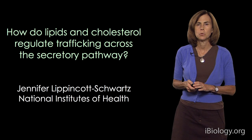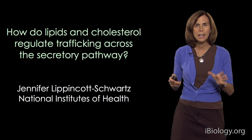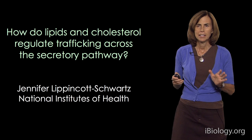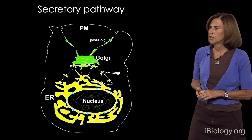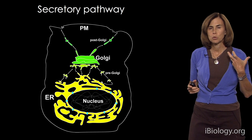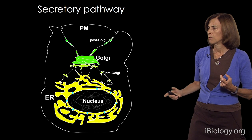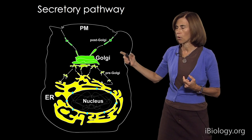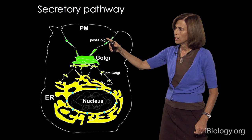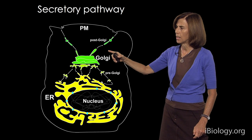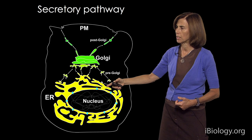Before describing what the roles of these lipids might be in regulating the secretory pathway, let me first give you a perspective of this system. The secretory pathway is characteristic of all eukaryotic cells and is comprised of three major compartments: the endoplasmic reticulum, the Golgi, and the plasma membrane, as well as transport intermediates that flow between these different organelles.